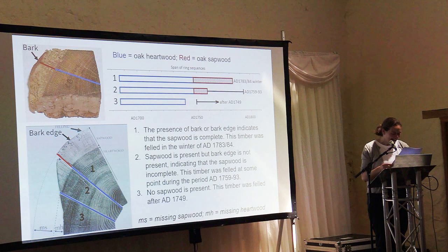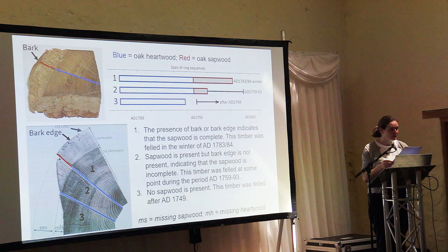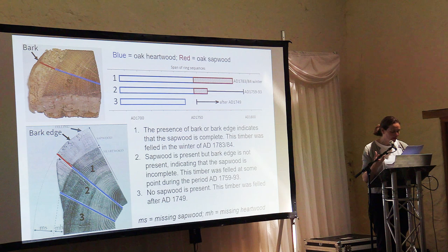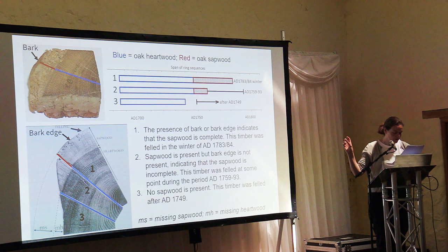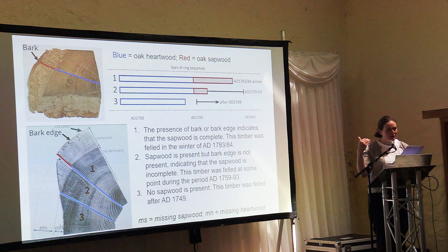Where some sapwood has survived but the bark edge has been lost during the processing of the tree into the timber element — or sometimes subsequently due to rot or damage — they might be able to give a felling date range, saying the tree was felled between two dates, a period of perhaps 20 or 30 years. The number of sapwood rings is relatively constant, so if part of the sapwood is missing, they can estimate the number of rings lost to produce a felling date range. Where they've only got heartwood with no sapwood at all, it's possible to produce a date after which the tree was felled — a terminus post quem — but that can be very imprecise; you might say a timber was felled after 1450, but it could be 150 years later.